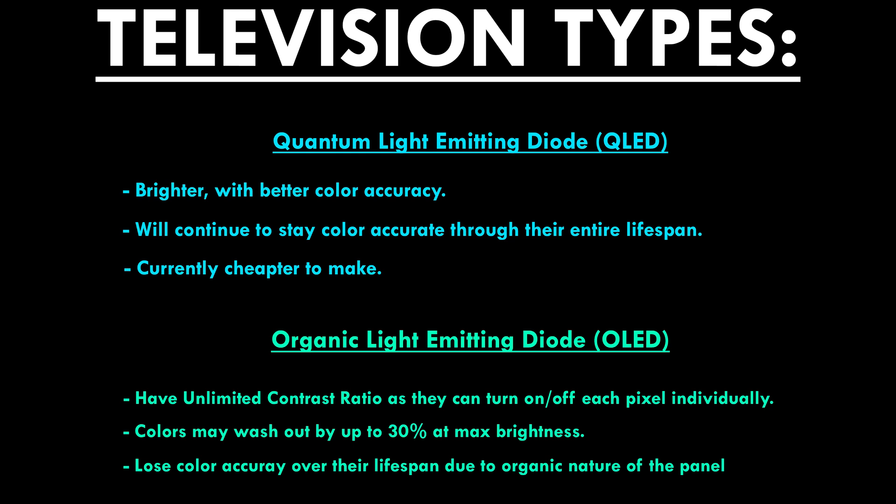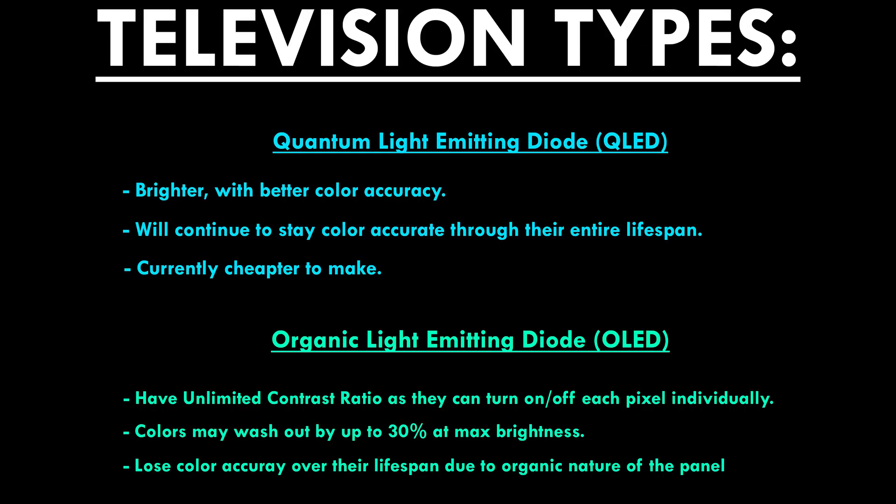There are two major types of televisions on the market right now. The first is quantum light emitting diode, aka QLED, and the second is organic light emitting diode, aka OLED. The main differences are that QLED TVs are going to be brighter, have better color accuracy, and will stay that way longer than OLEDs. However, OLEDs have unlimited contrast ratio allowing perfect blacks with bright whites, as they are self-emissive and can turn on and off every single pixel. Due to this, they use less energy and are thinner.